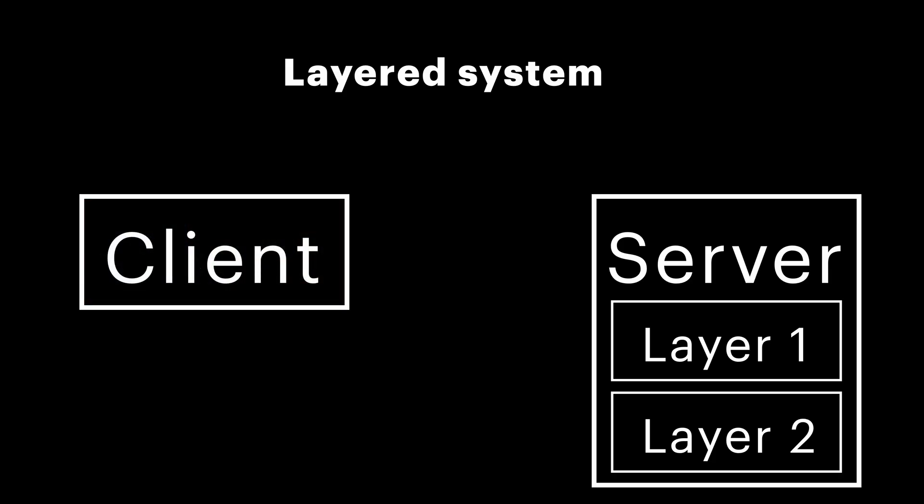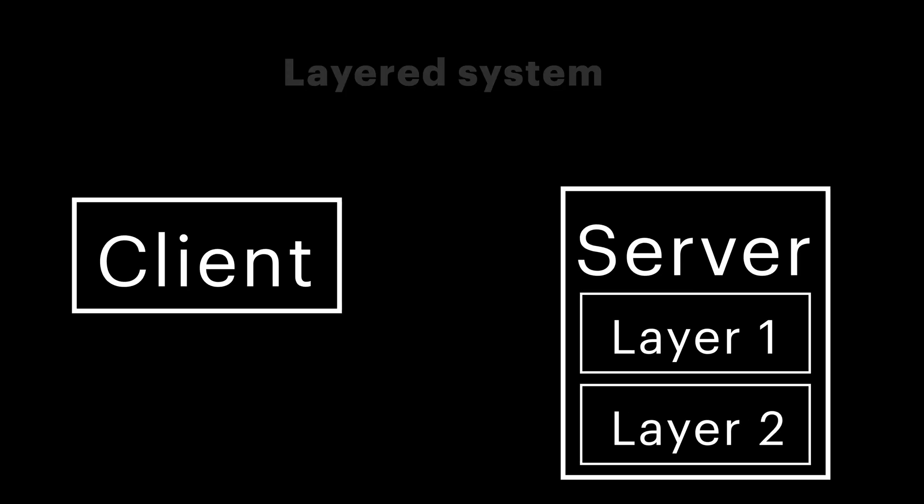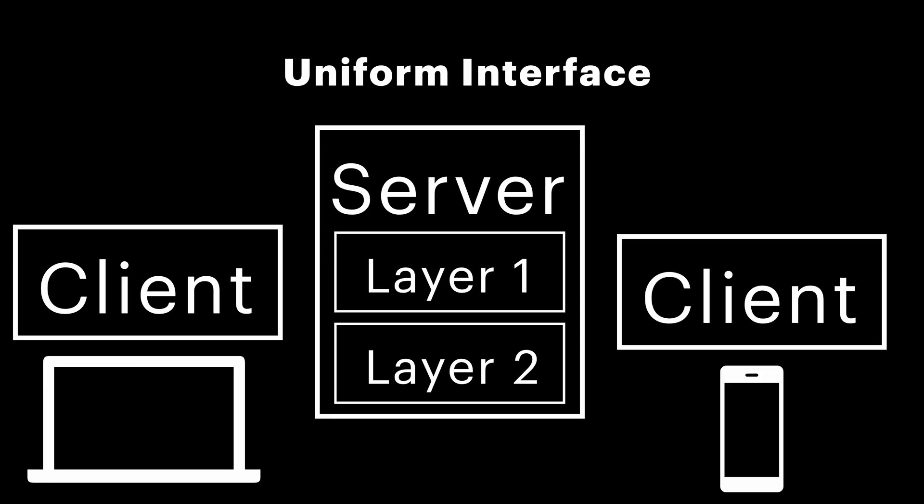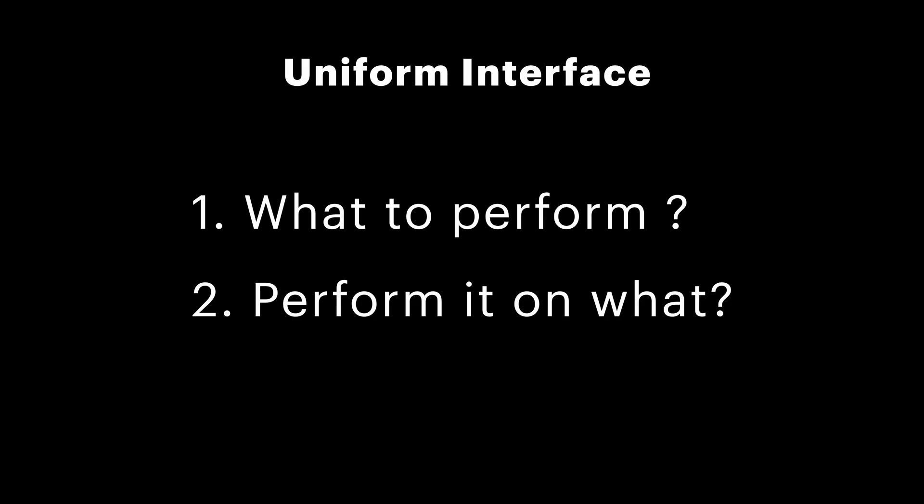The next one, uniform interface, is really important. It consists of a few key sub-rules, but in essence, the main idea is that there should be a consistent way to interact with the server, regardless of the device or application used. In addition to that, this constraint answers two very important questions: how do we identify the operation the client wishes to perform, and how do we identify which data the operation should be performed on?